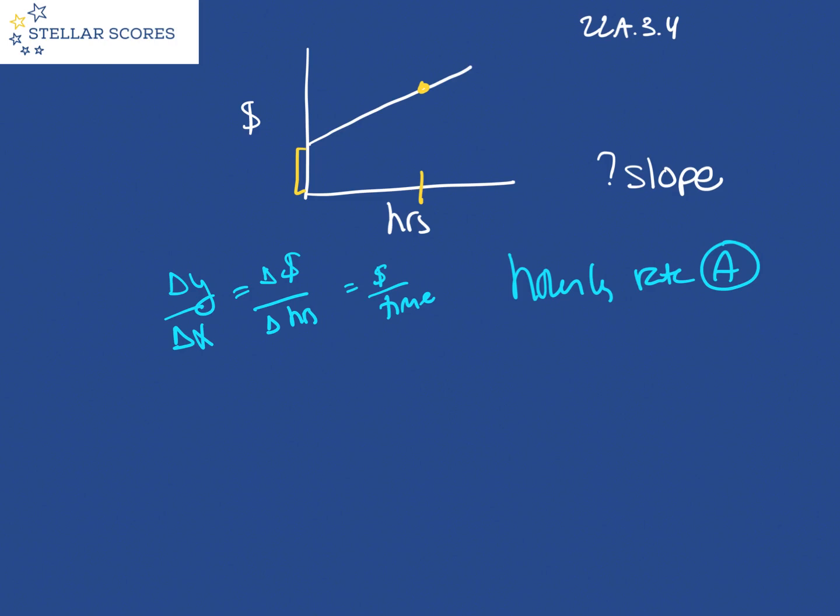So the slope, that change over time, that hourly rate, the total charge or the amount that he's going to charge for the job will change depending on the hours that he works. Again, slope. So that's going to be choice A.